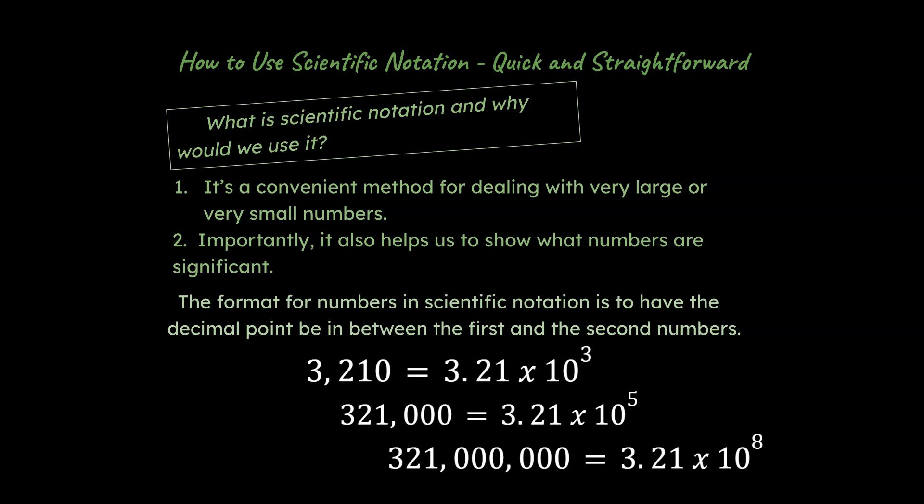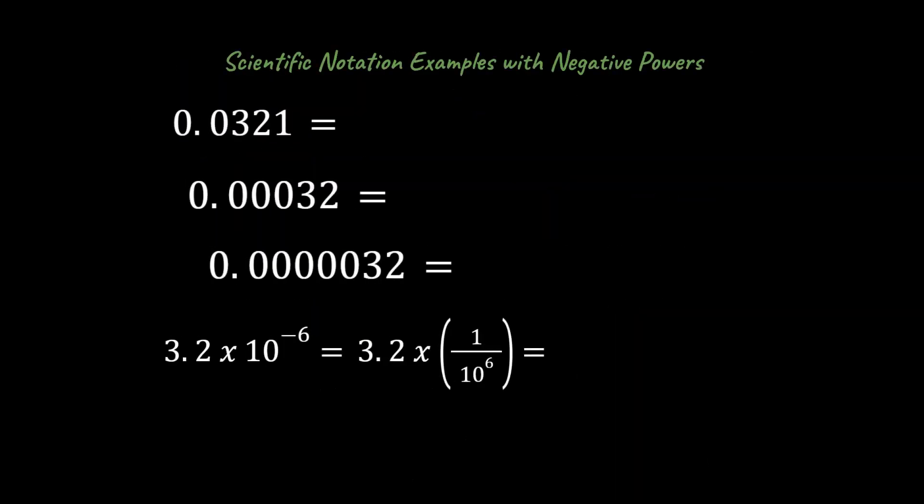So hopefully you can see the pattern here. These times 10 to the something power are a way to help us to write very large numbers in a small and compact and easy to deal with way. So that's what we're doing here. But it's not just very large numbers that we can do this with. We can do this with very small numbers as well. So if I show you a similar pattern over here, this number right here,